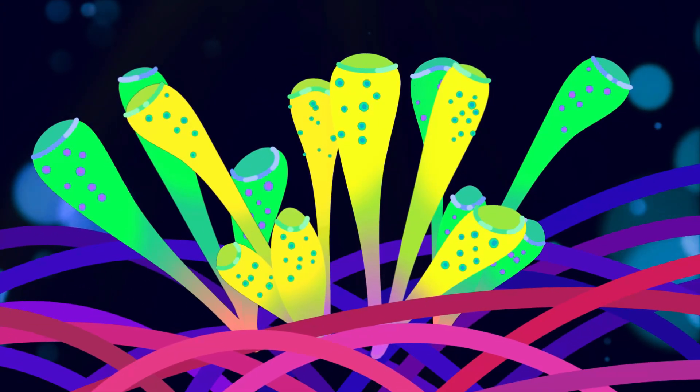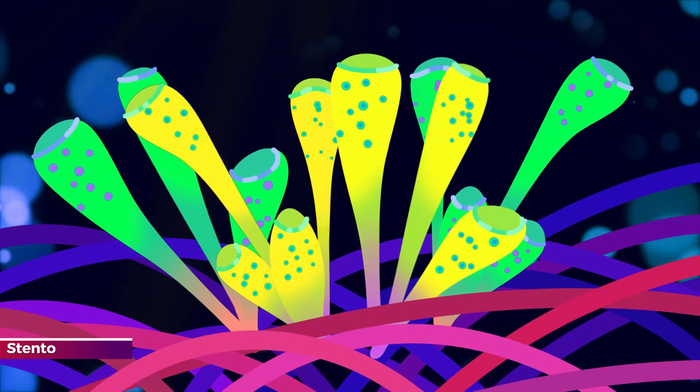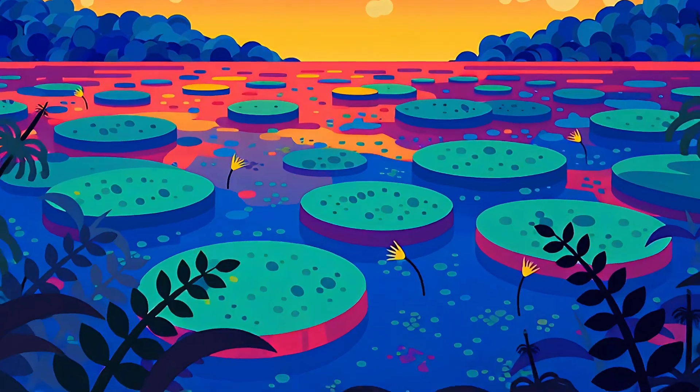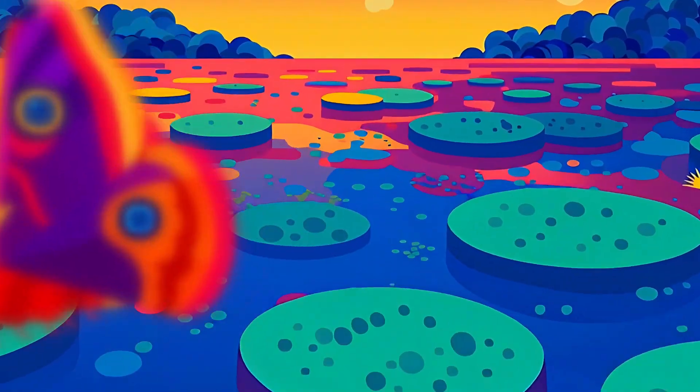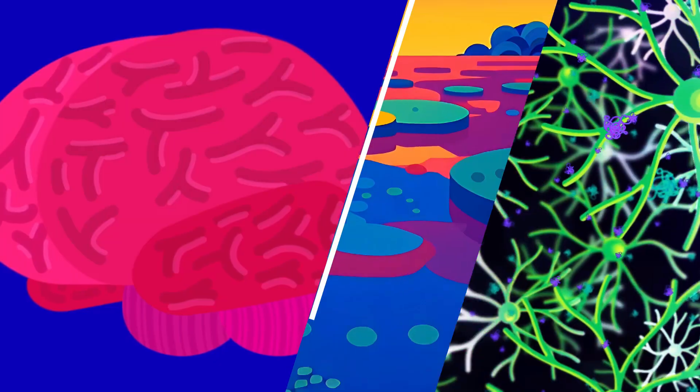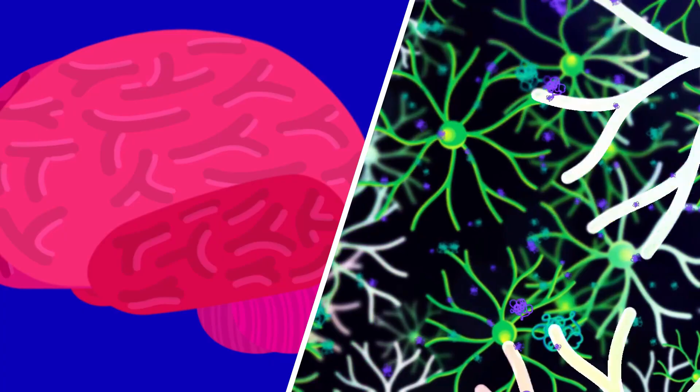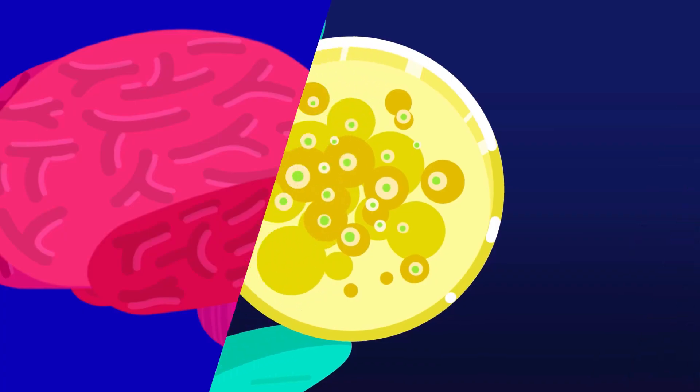Which brings us to one bizarre creature. Stentor Rosali. This little trumpet-shaped protozoan lives in ponds, puddles, and streams. No brain, no nerves, just a single cell. Yet it might be the most compelling argument in favor of single-cell consciousness.